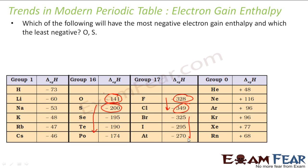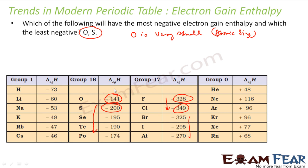And then it starts decreasing. If you see minus 328, it became all the more negative, and then less negative. Why is this happening? This is happening because oxygen is very small in atomic size. So when a new electron is added, it is repelled — the electron gain enthalpy is less, meaning less energy is released. But if you start from sulfur, it follows the pattern because sulfur is of comparatively decent size.